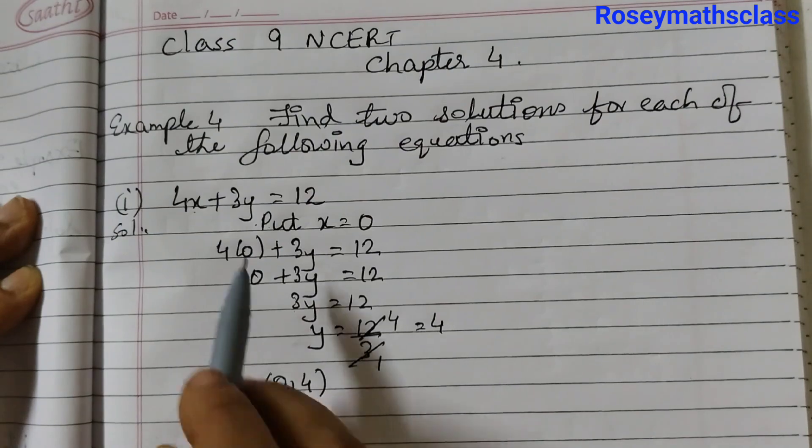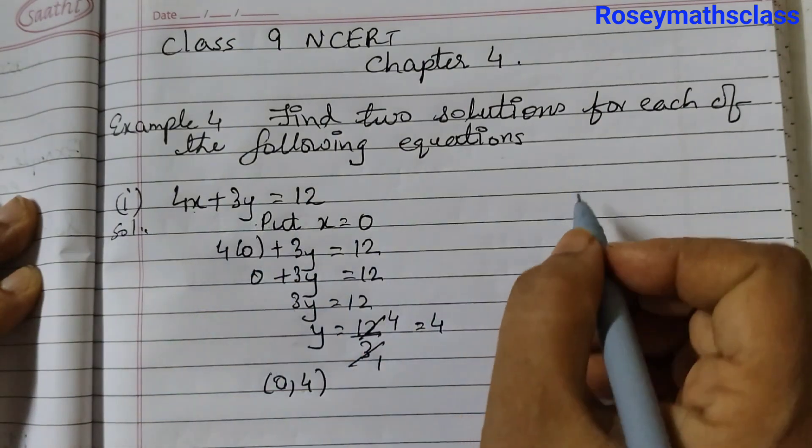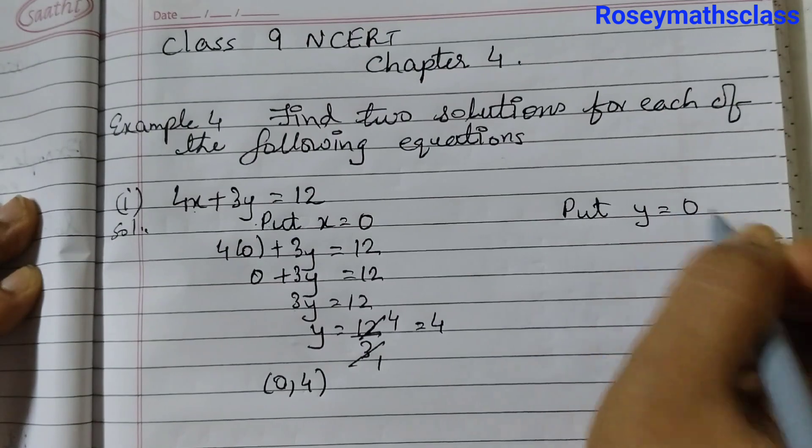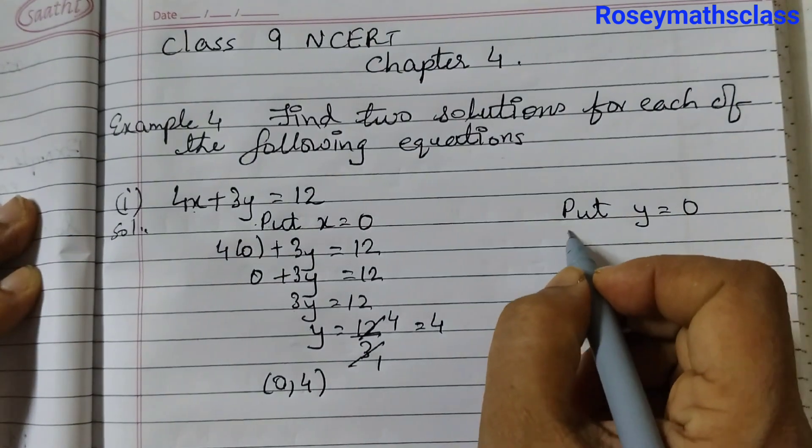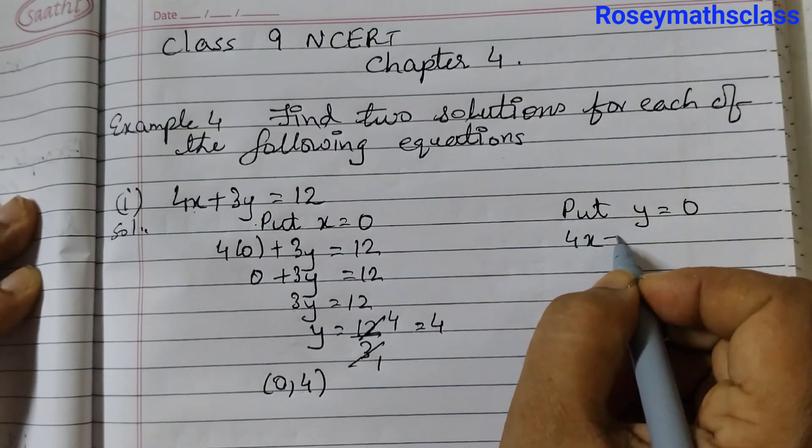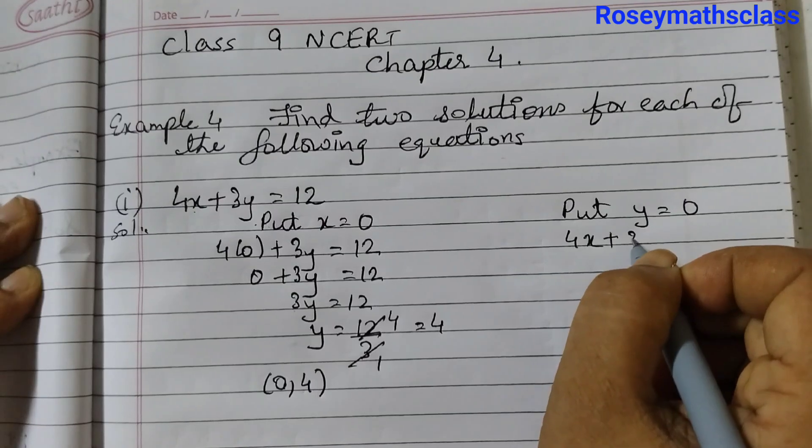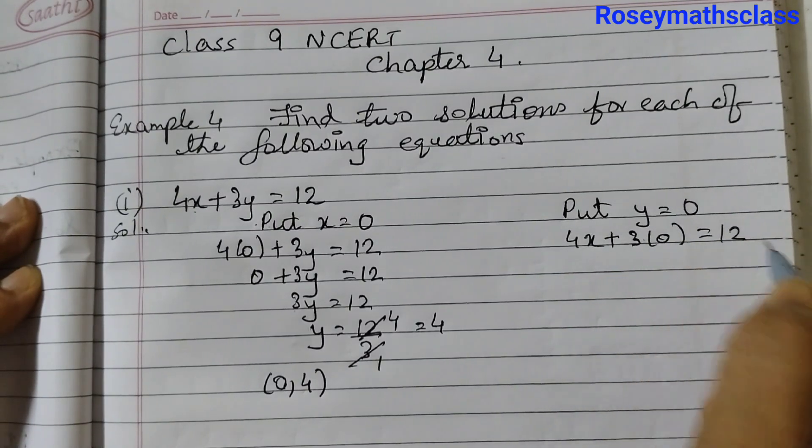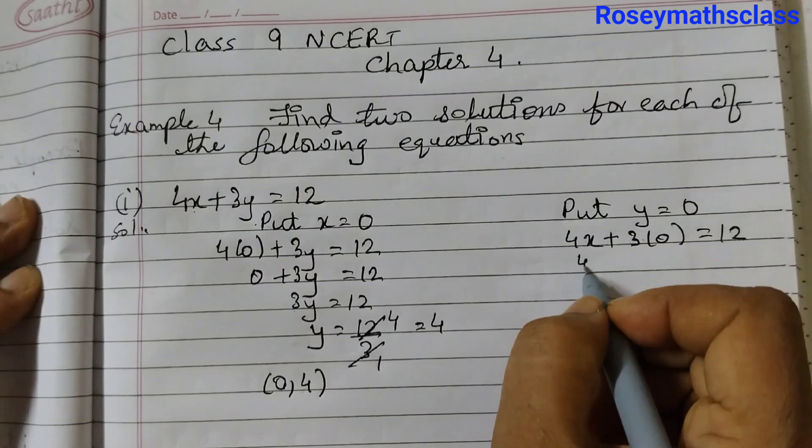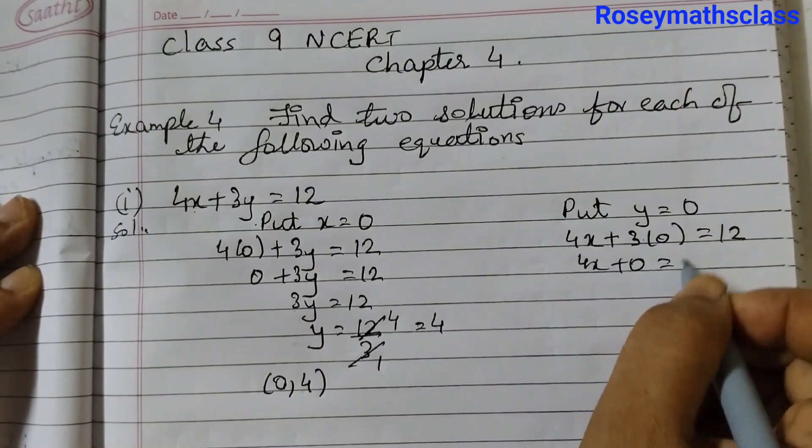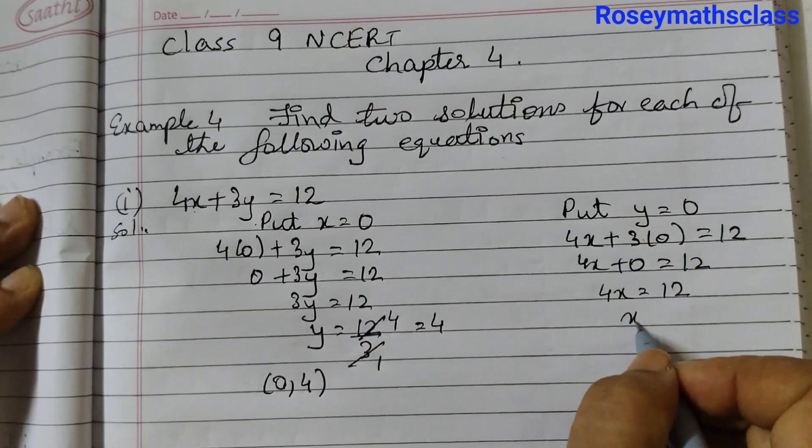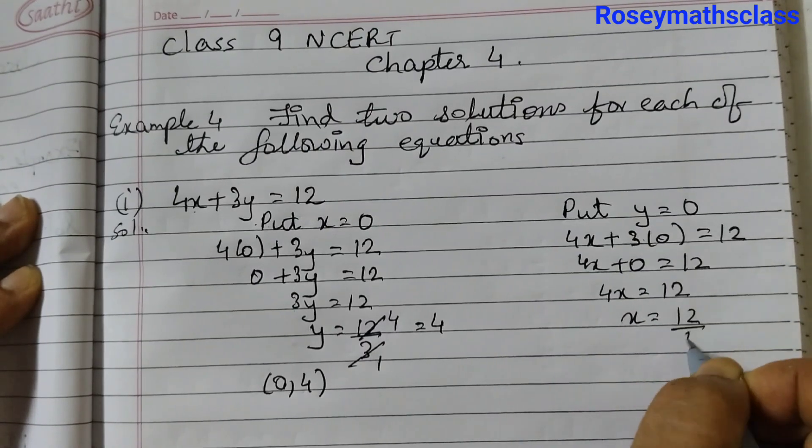And for the second one we can take y equals to 0. So here you put y equals to 0. Then it will be 4 into x plus 3 into 0 equals to 12. So 4x plus 0 equals to 12. 4x is equal to 12. x is equal to 12 divided by 4.